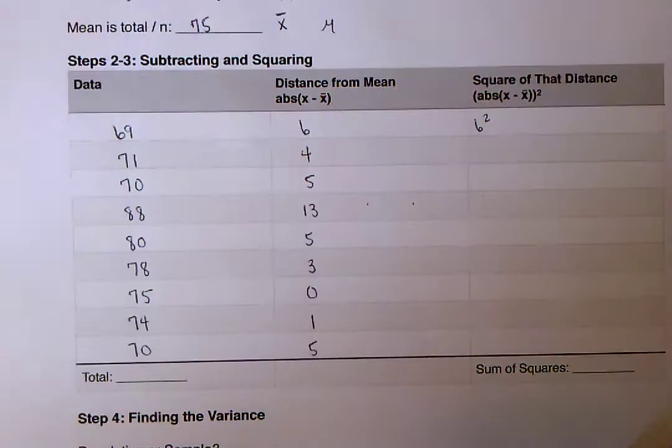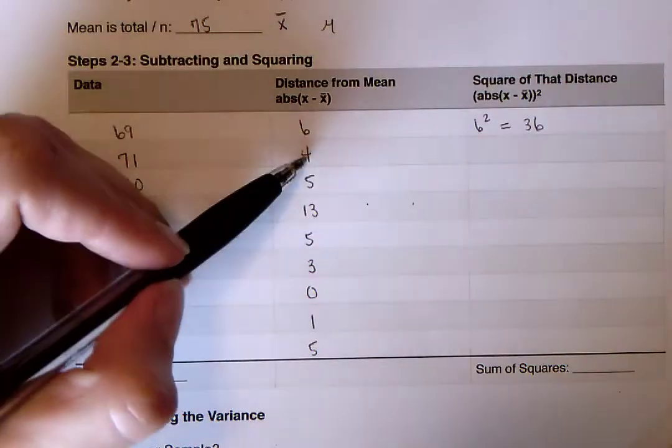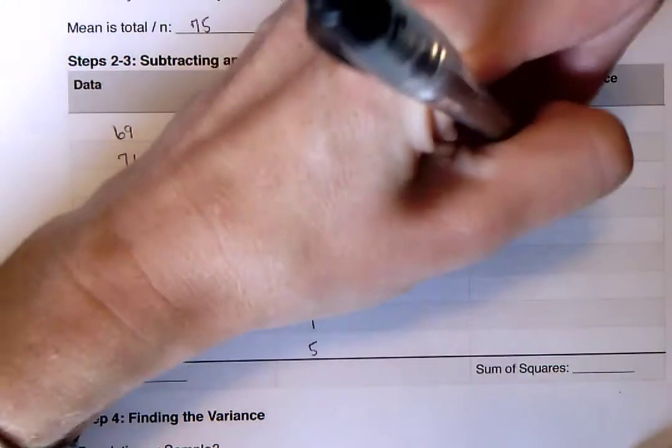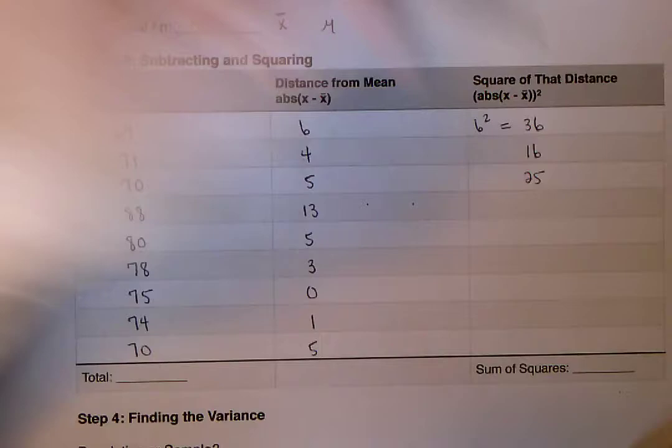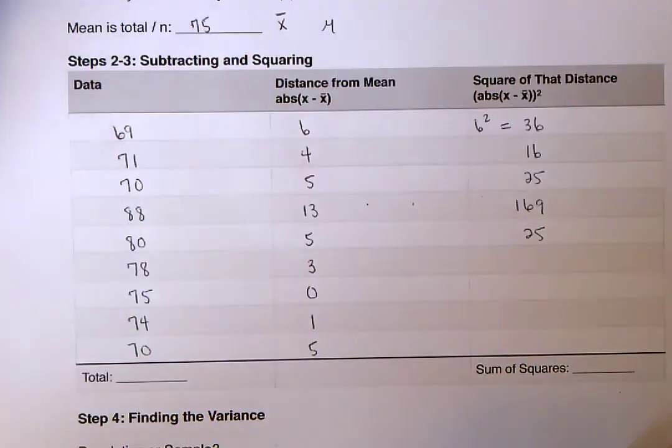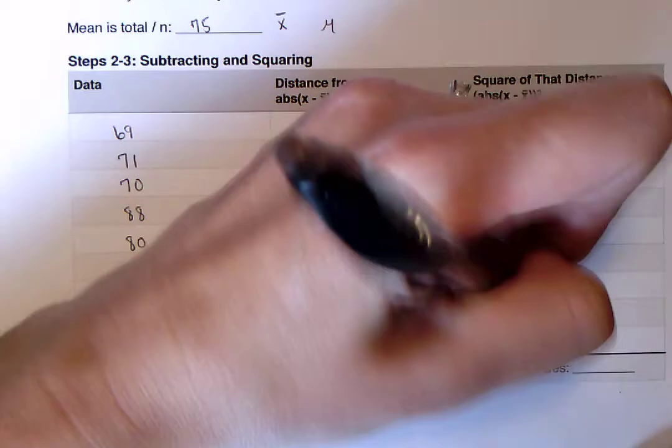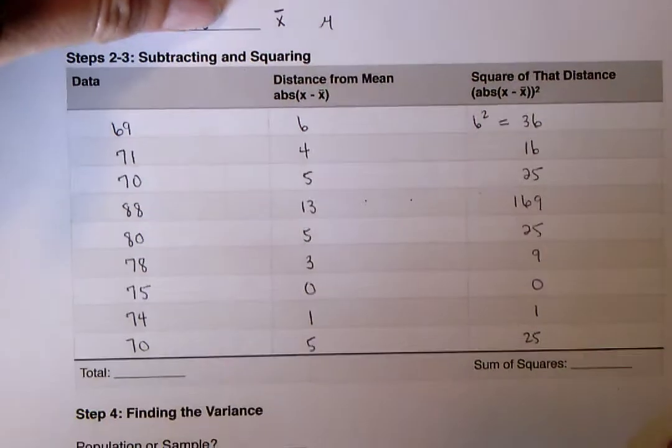Alright, so 6 squared is what we're doing. So 6 squared, that's 36. 4 squared, 16. 5 squared is 25, and I'm just going to keep on squaring these. So 13 squared, 5 squared, 3 squared is 9, 0 squared is 0, 1 squared is 1, and again, 5 squared is 25.